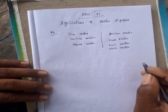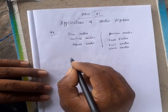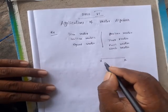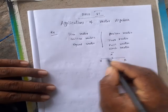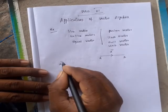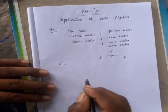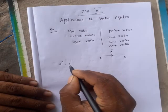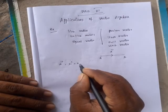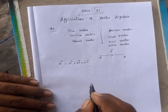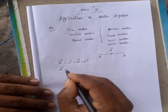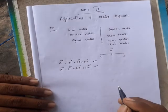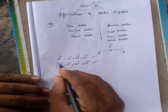We also know that vectors are represented as A vector. If there is a point A and a point B, the vector going from A to B is represented as A vector, with components along I, J, K unit vectors. For example, A vector equal to 3i cap plus 4j cap plus 5k cap — both cap and vector notation are the same.